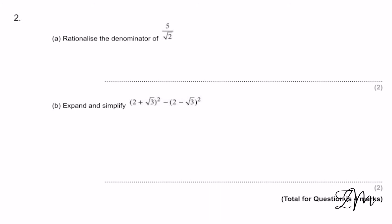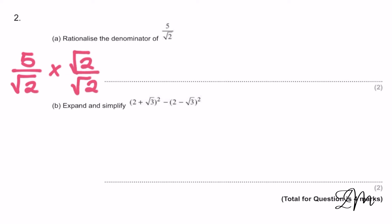Let's try another one — this one's very similar. You've got 5 over √2; you've got to multiply top and bottom by √2. So you're going to get 5√2 over 2.